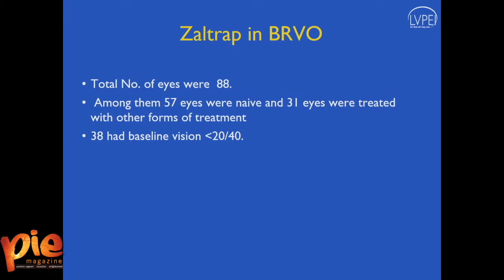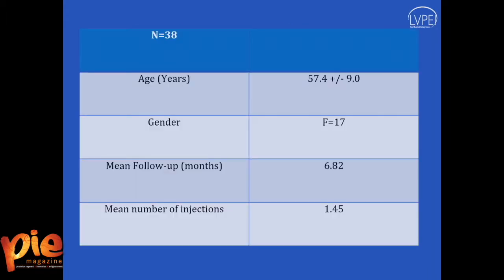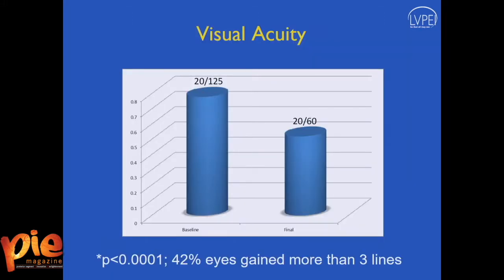Coming to our experience of Zaltrap in branch vein occlusion, we have so far in the last two years injected 88 eyes, out of which 57 eyes were treatment naive. Excluding patients who had better vision than 20/40, we could get a subset of 38 patients for analysis. Out of these, 17 were female. The mean follow-up was 6.82 months and the mean number of injections was 1.45, which is significantly lower than what you would expect in a clinical trial. This was a retrospective study.